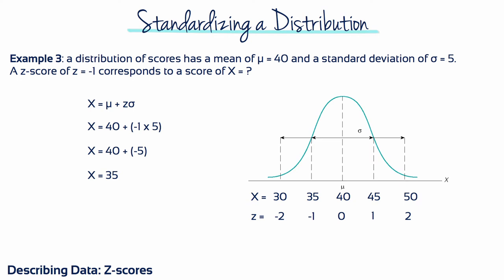Example 3: A distribution of scores has a mean of 40 and a standard deviation of 5. If we have a z-score of minus 1, what does that correspond to in terms of x? We need to rearrange the z-score formula so that x equals mu plus z times sigma and then substitute in the values. Minus 1 times 5 equals minus 5. Minus 5 plus 40 gives us an x-value of 35.